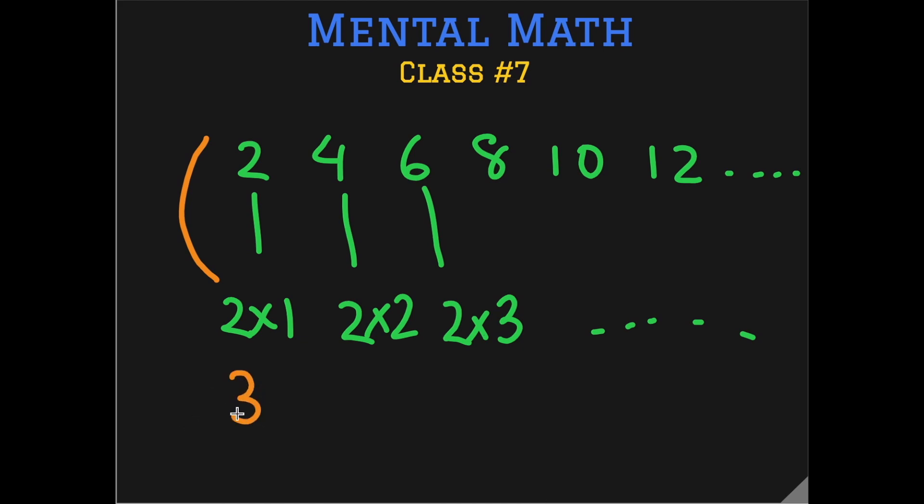So is the case with the table of 3, that is you skip count in 3's, start saying them very quickly 3, 6, 9, 12, 15 and then relate them to the actual multiplication expressions. 3 multiplied by 1 is 3, 3 multiplied by 2 is 6 and so on and 4 is exactly the same.